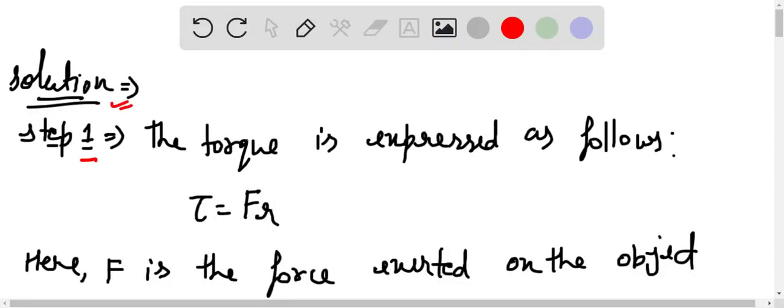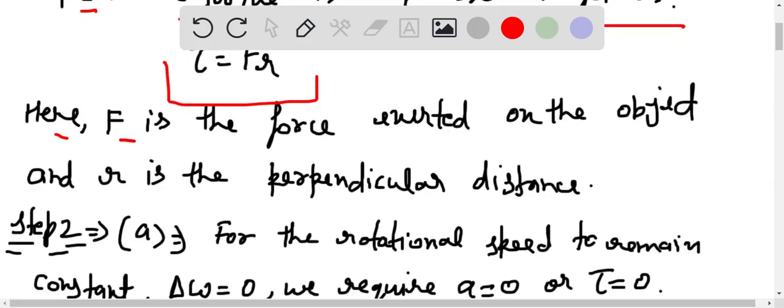Here for the solution, for step 1, the torque is expressed as follows: τ = FR. Here, F is the force exerted on the object and R is the perpendicular distance.